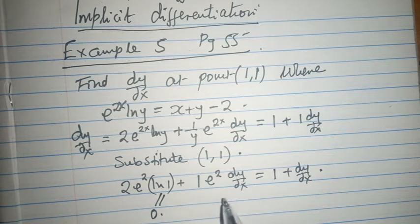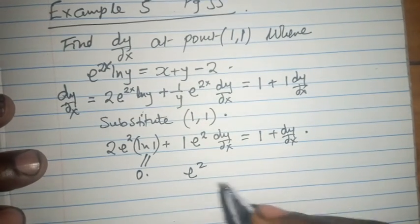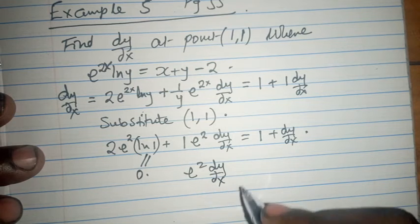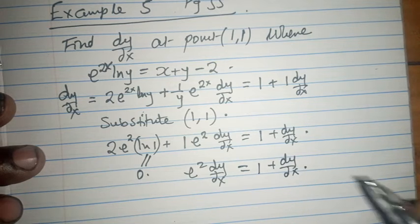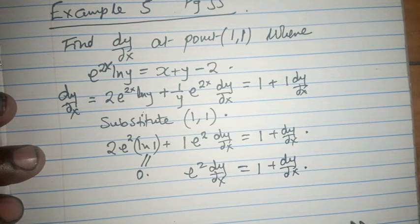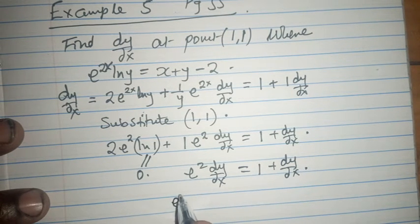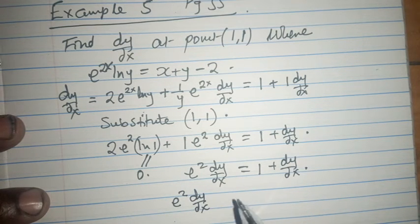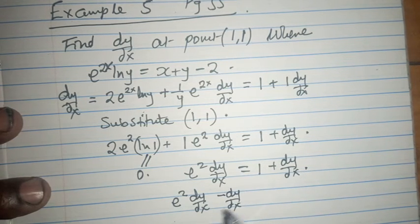So we are left with just this term which is going to be e raised to power 2 dy/dx equals 1 plus dy/dx. So what do we have now? We have e raised to power 2 dy/dx minus dy/dx, this term comes over.